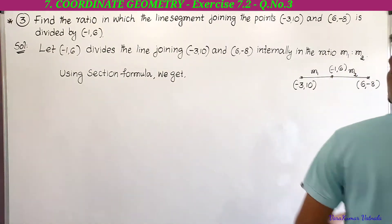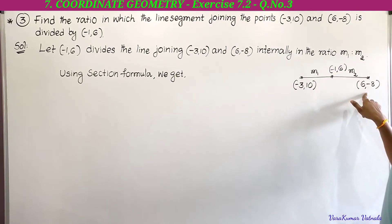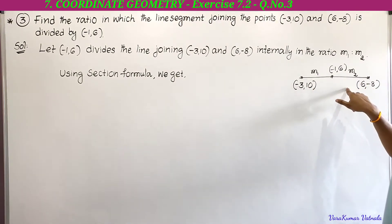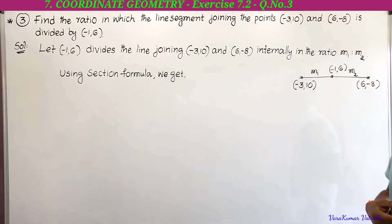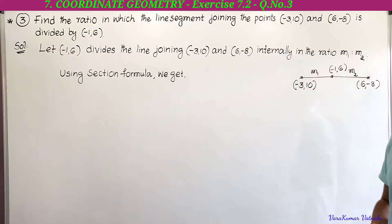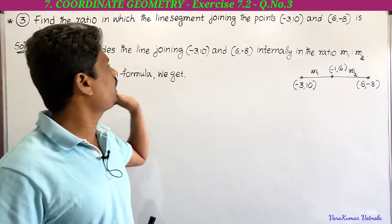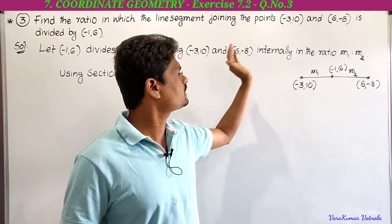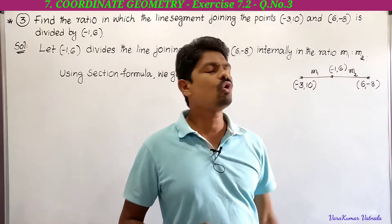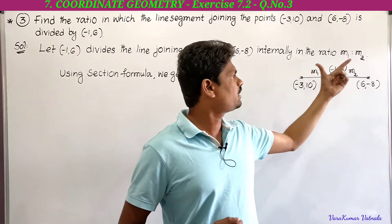The two points given are (-3, 10) and (6, -8). The line joining these two points is divided by the point (-1, 6). We need to find in which ratio. Let it be m1 : m2. So let (-1, 6) divide the line joining (-3, 10) and (6, -8) internally in the ratio m1 : m2.